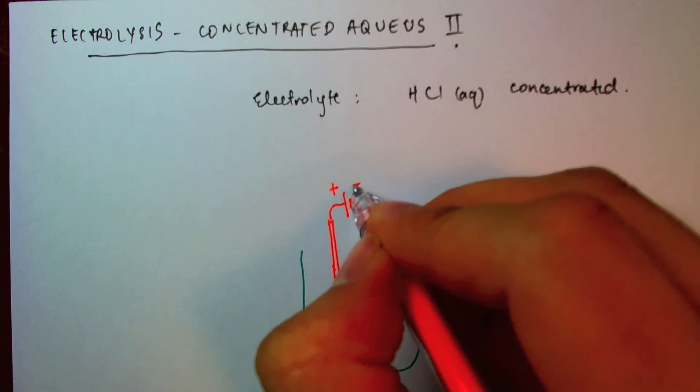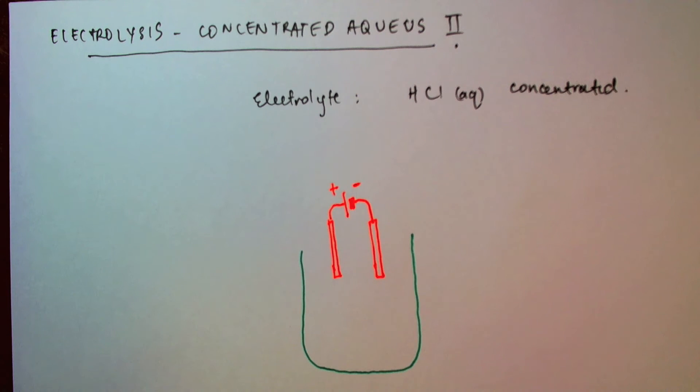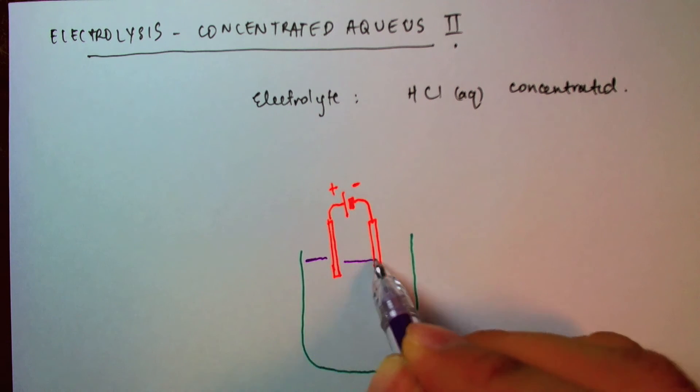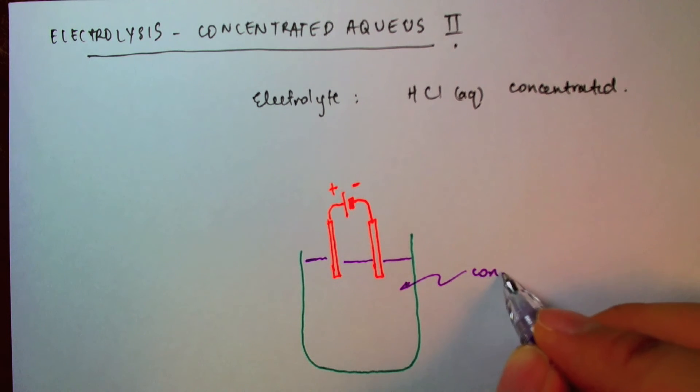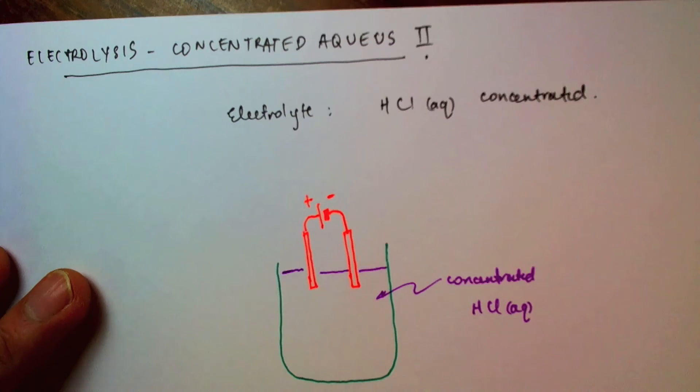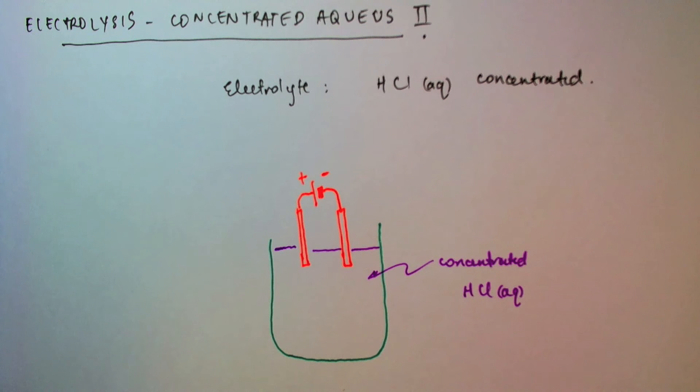The longer end is a positive end, the shorter end is a negative end, and now I fill my beaker or container with this solution of concentrated hydrochloric acid. Concentrated HCl aqueous. And concentrated just means that there are lots and lots of HCl in there and not a lot of water.